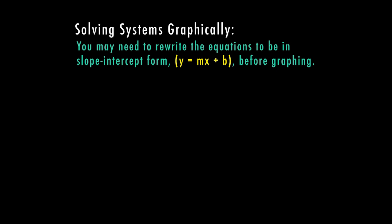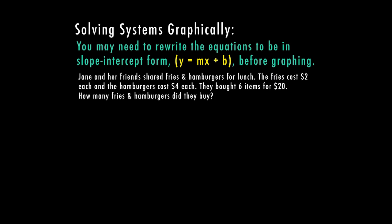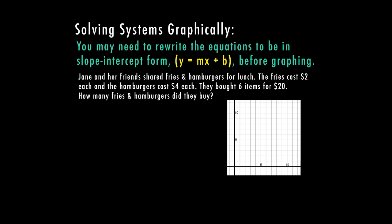We're going to do another example, but sometimes you have to rewrite the equations into slope-intercept form, y equals mx plus b, before you can graph them. From our situation: Jane and her friends shared fries and hamburgers for lunch. The fries cost two dollars each and the hamburgers cost four dollars each. They bought six items for twenty dollars. We want to know how many fries and hamburgers did they buy.